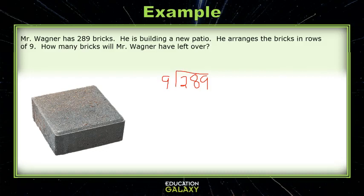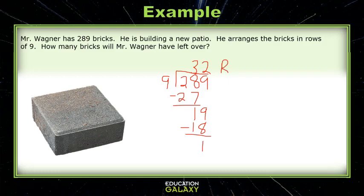9 can't go into 2, so we look at 9 going into 28. 9 goes into 28 three times, but 9 times 3 is 27. 28 minus 27 is 1. Then we drop down the 9 — we get 19. 9 goes into 19 twice, but 2 times 9 is 18. 19 minus 18 is 1, so we have 1 left over. Our answer is 32 remainder 1. That means Mr. Wagner had 32 rows of 9 and 1 left over, so our answer is 1.